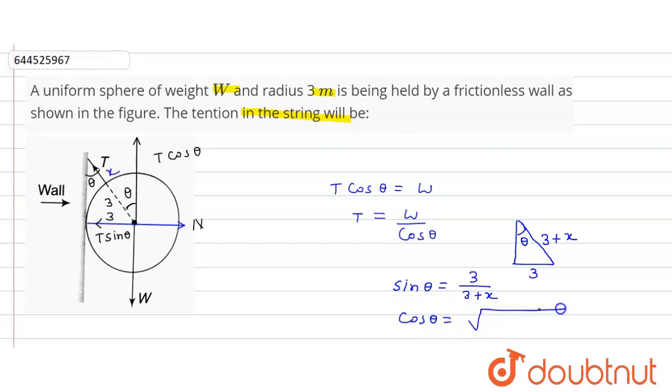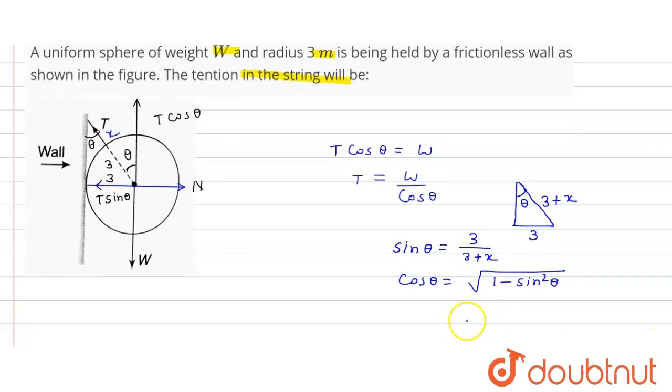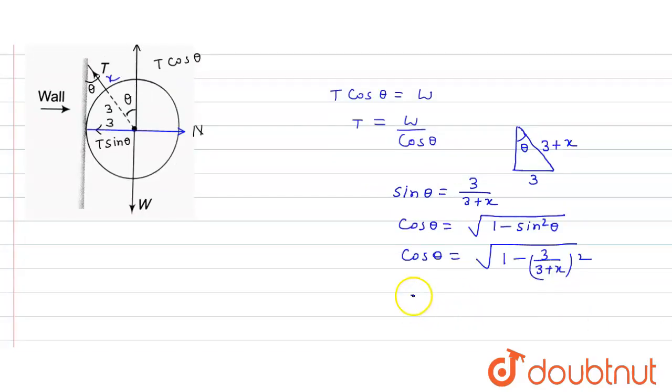So cos theta is equal to under root of 1 minus sin squared theta. Cos theta is equal to under root of 1 minus 3 upon 3 plus x squared. Cos theta is equal to under root of 1 minus 9 upon 9 plus x squared.